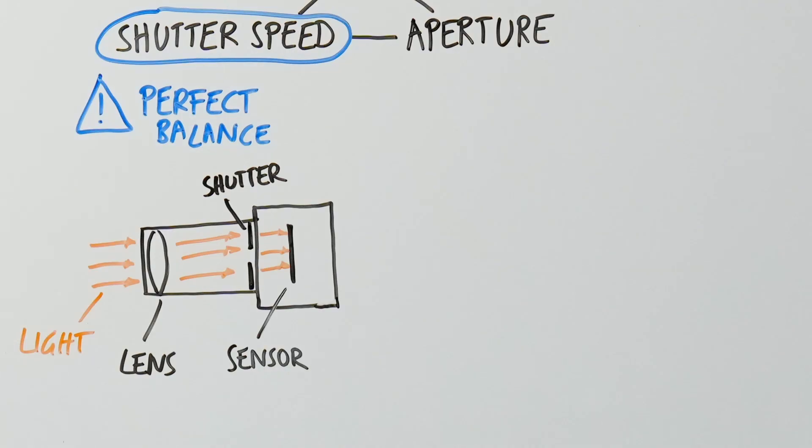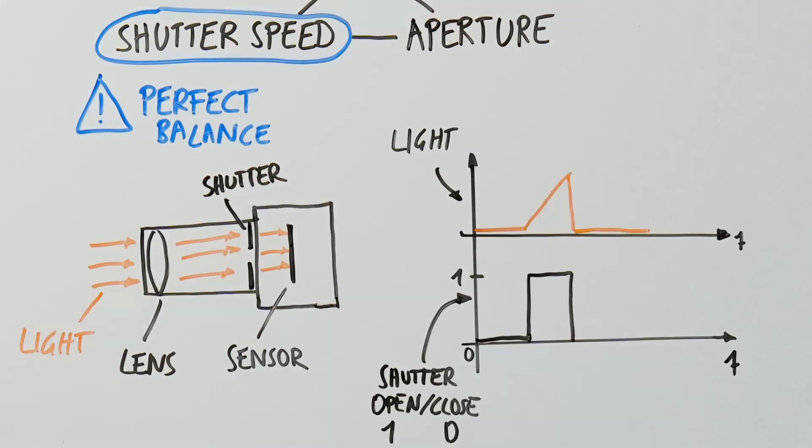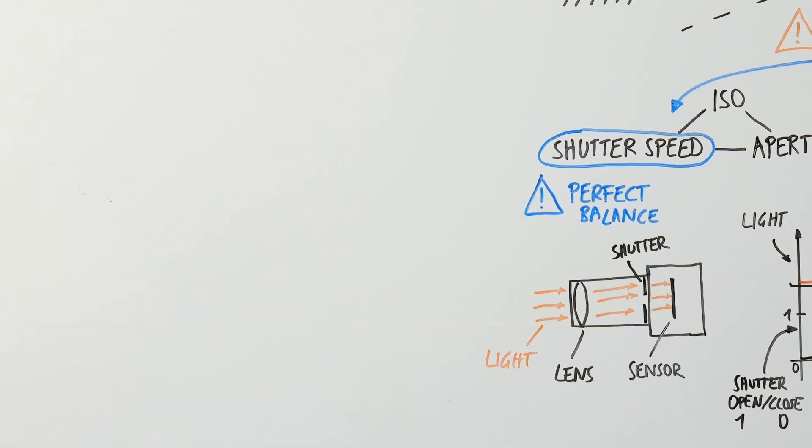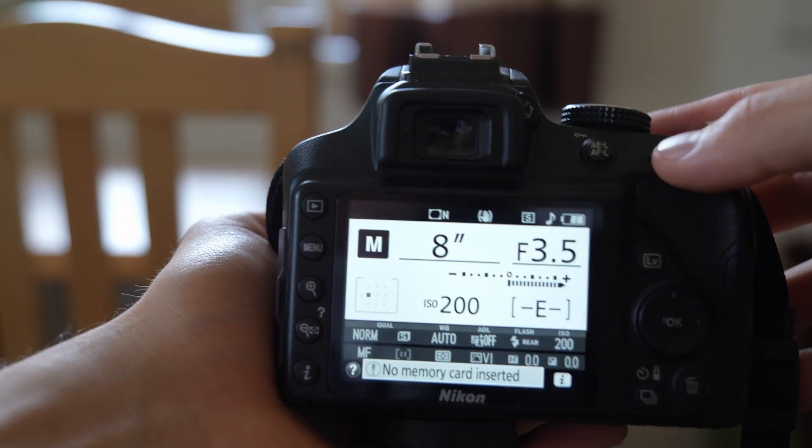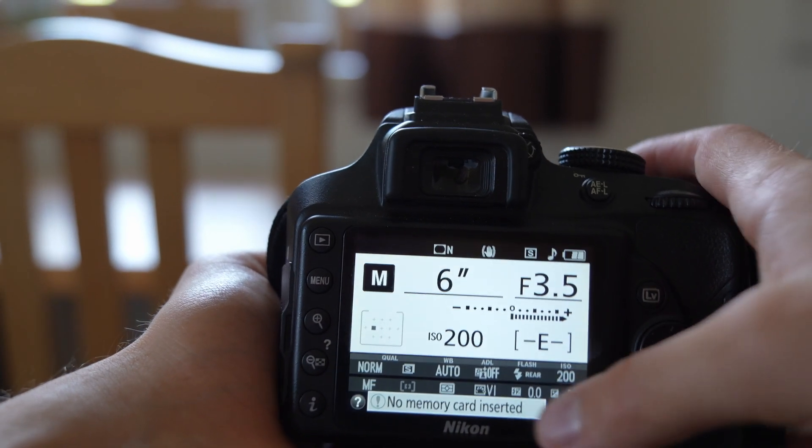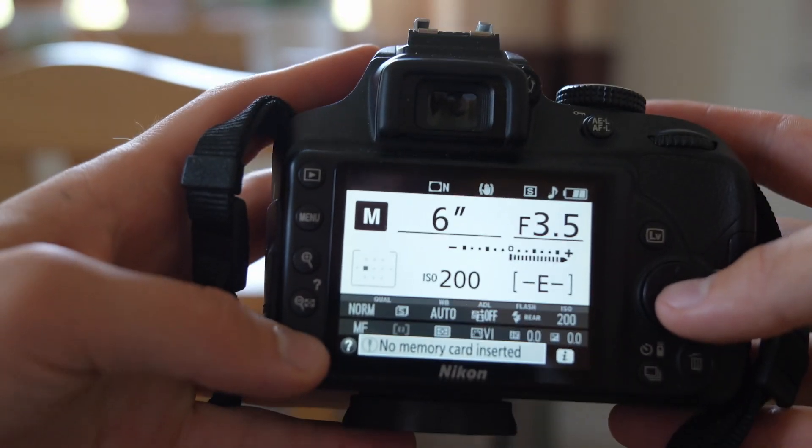The shutter speed is the time the shutter opens so that the camera sensor receives light. The longer it opens, the more light the sensor receives. So it was crucial to strike a balance between receiving enough light to make the flight paths visible, while not too much to not overexpose the image. We set the camera to a 6-second shutter speed, an f-stop of 2.8 and an ISO of 400.